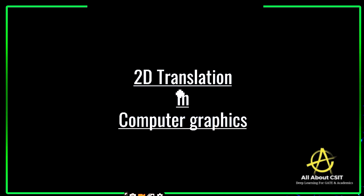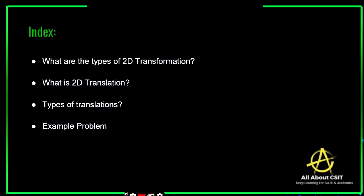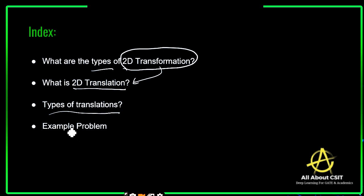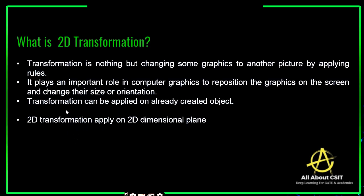Today we will see another concept in computer graphics: 2D translation. Let's look at the topics I am going to cover in this video. First, we will see what exactly 2D transformation is. Before trying to understand the translation, you need to know what exactly 2D transformation is. We will see the different types of transformations, and one of those transformations is 2D translation. Let's start our video.